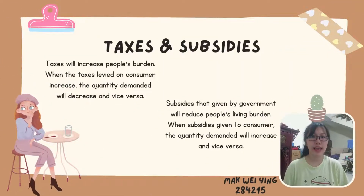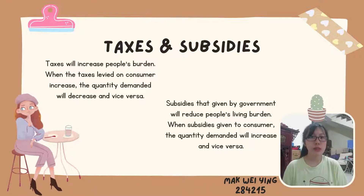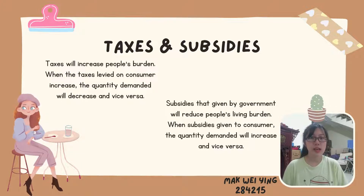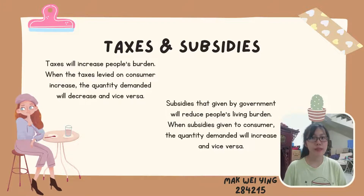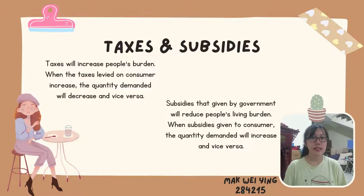Tax and subsidies to consumers also cause shifts in the demand curve. Taxes levied on consumers, such as GST or SST, influence the quantity demanded. When tax increases, the demand curve shifts to the left; when tax decreases, the demand curve shifts to the right. Subsidies provided by the government reduce consumers' living burden, thus causing the demand curve to rise when the government provides subsidies.